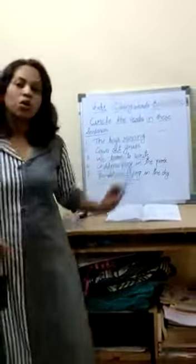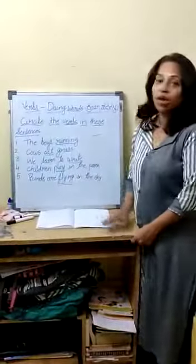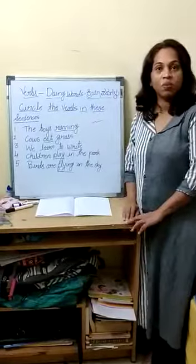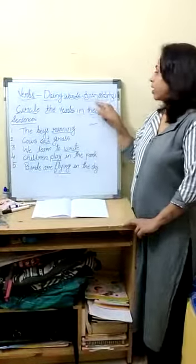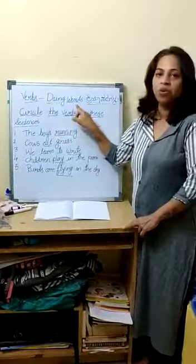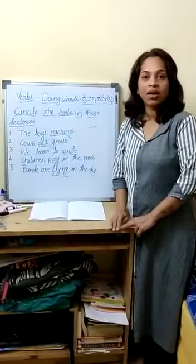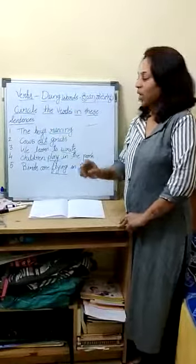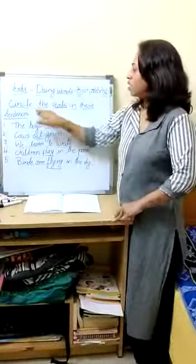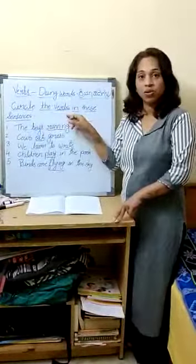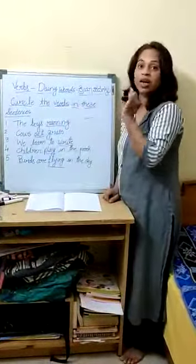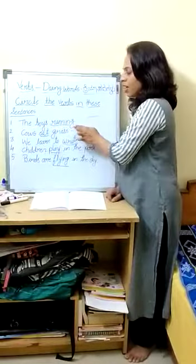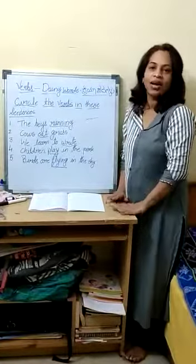Okay children, I hope you all have understood this. Today is your homework: see the video and write down the examples of are, am and is. After that on the next page, write verb means doing words — in Kannada, kriyapadagalu. Don't write Kannada, only write doing words. Then circle the verbs in the given sentences: the boys running, cows eat grass, baby cries, birds flying. Read and write, then circle the verb. Bye, take care, we meet in the next class.